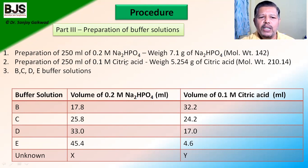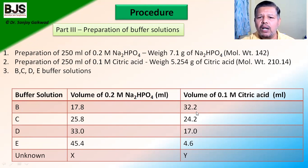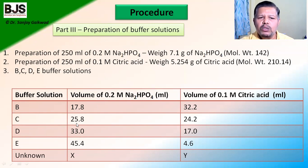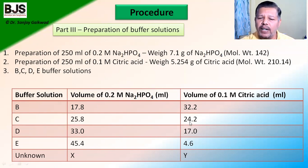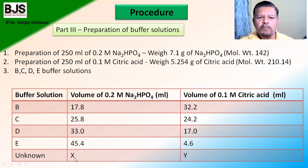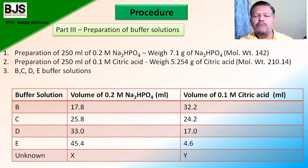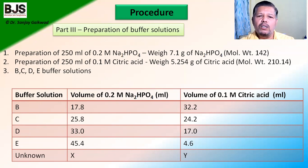Buffer B is prepared by combining 17.8 mL of 0.2 molar disodium hydrogen phosphate with 32.2 mL of 0.1 molar citric acid. Buffer C uses 25.8 mL of 0.2 molar disodium hydrogen phosphate plus 24.2 mL of 0.1 molar citric acid. Similarly, buffers D and E are prepared, and an unknown solution is given by the teacher. These stock solutions are then used to measure pH via EMF measurement using the potentiometer.